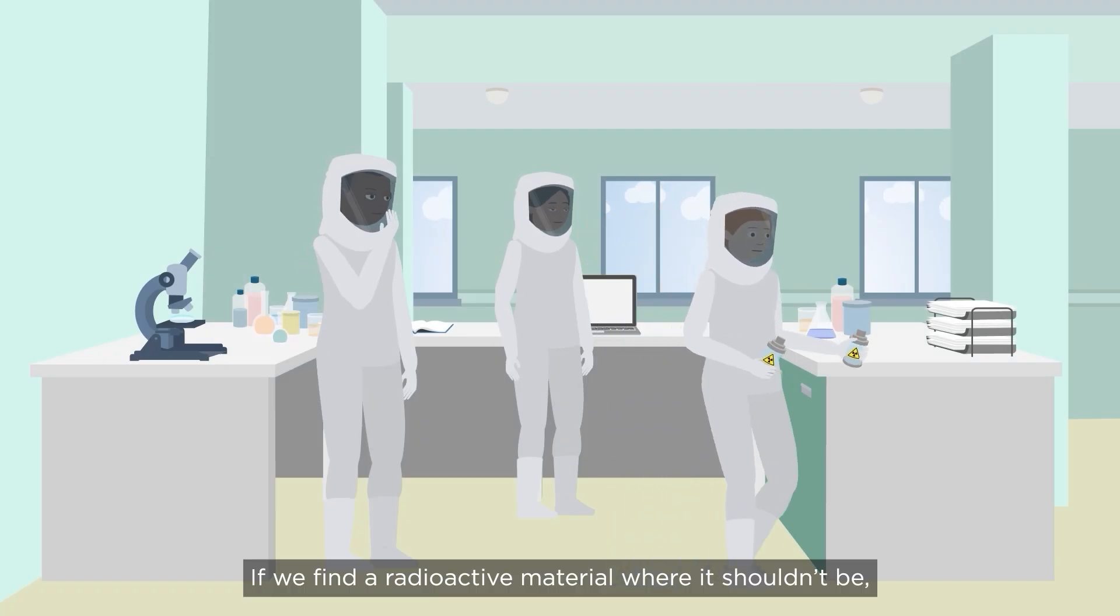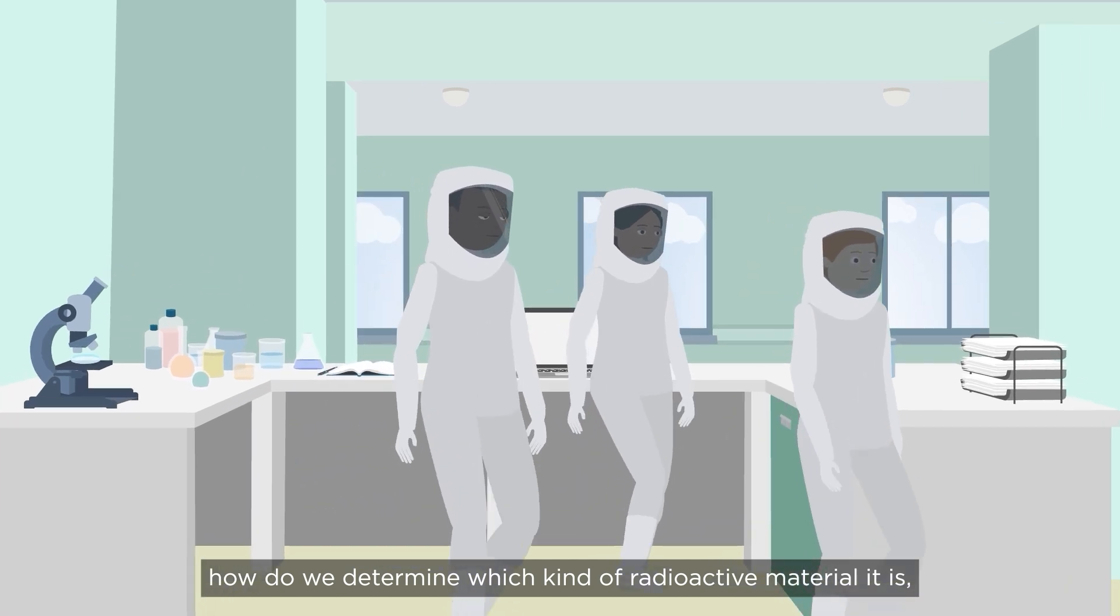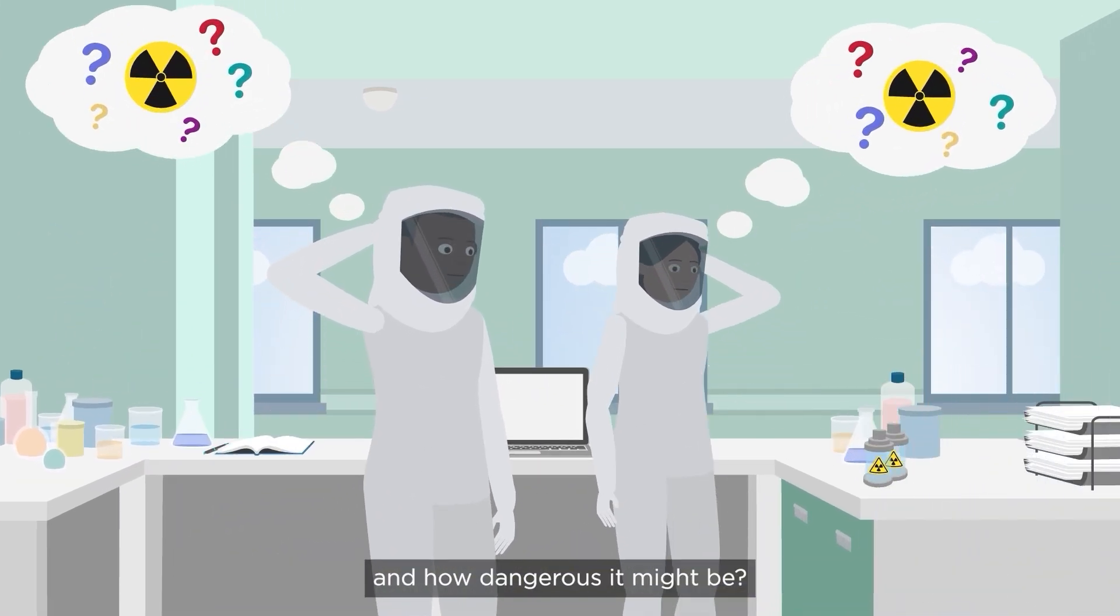If we find a radioactive material where it shouldn't be, how do we determine which kind of radioactive material it is and how dangerous it might be?